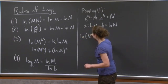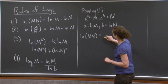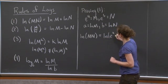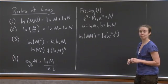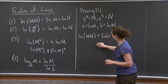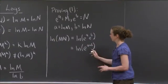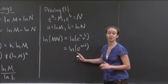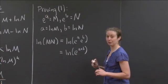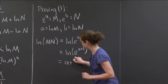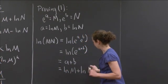The natural log of m times n — since m is e to the a and n is e to the b — can be written as natural log of e to the a times e to the b. Using rules of exponents, e to the a times e to the b is e to the a plus b. So we have natural log of e to the a plus b. Since natural log and exponential functions are inverses, natural log of e to the x is x, so this is just a plus b, which equals natural log of m plus natural log of n.